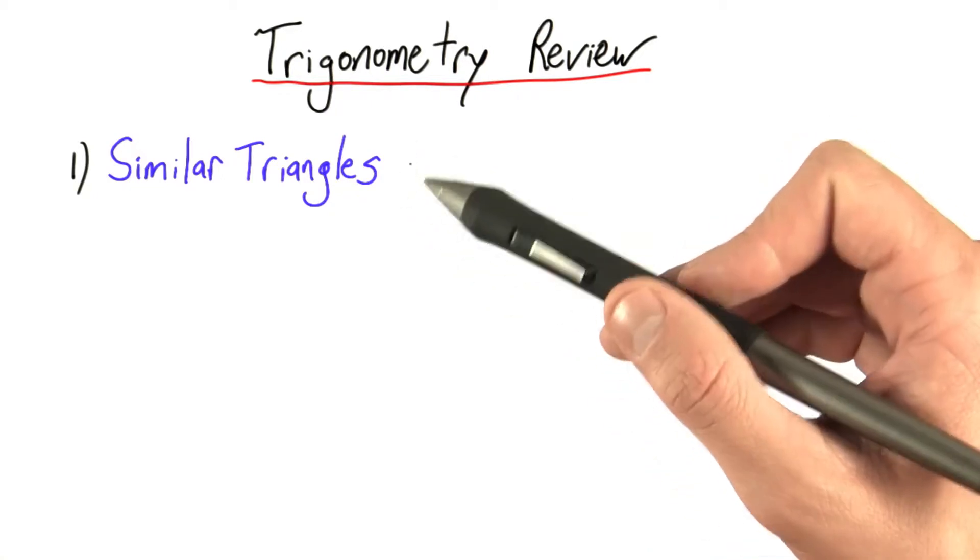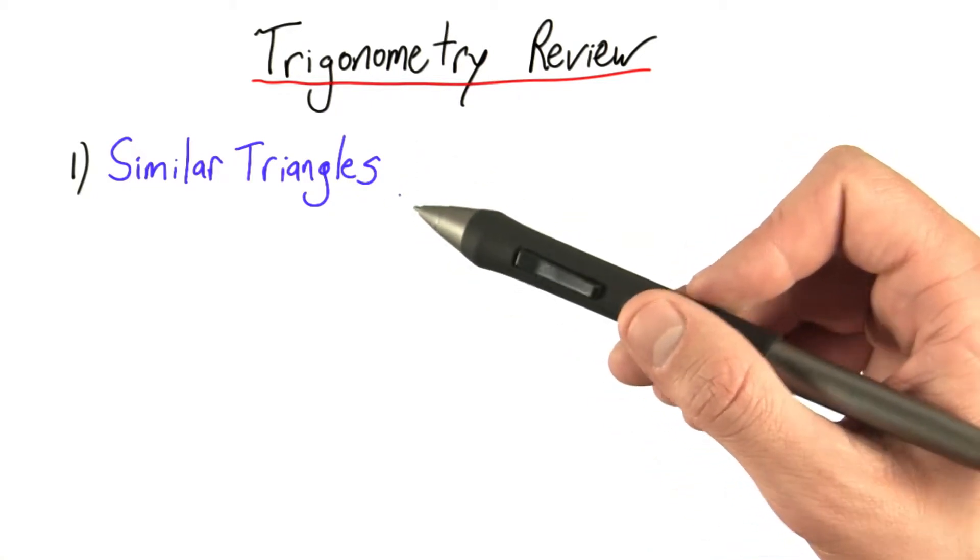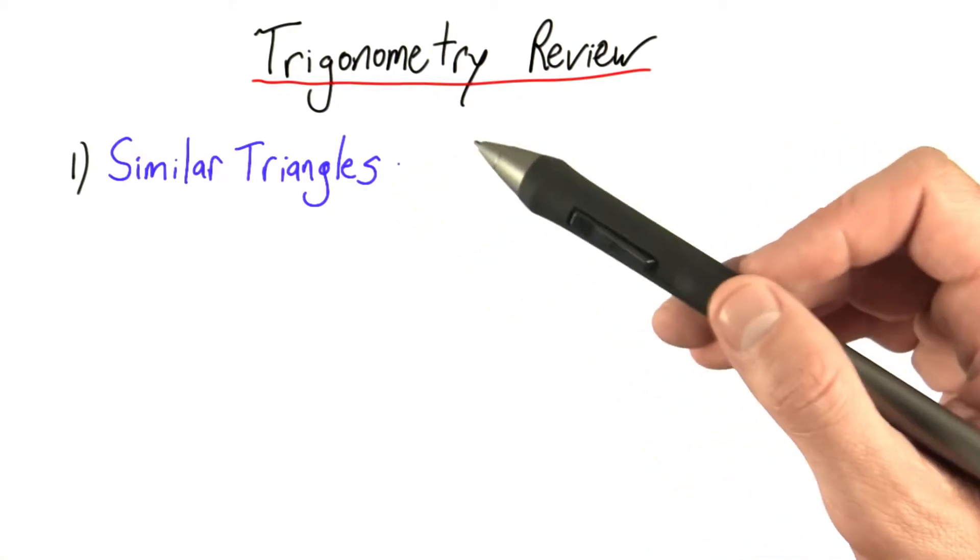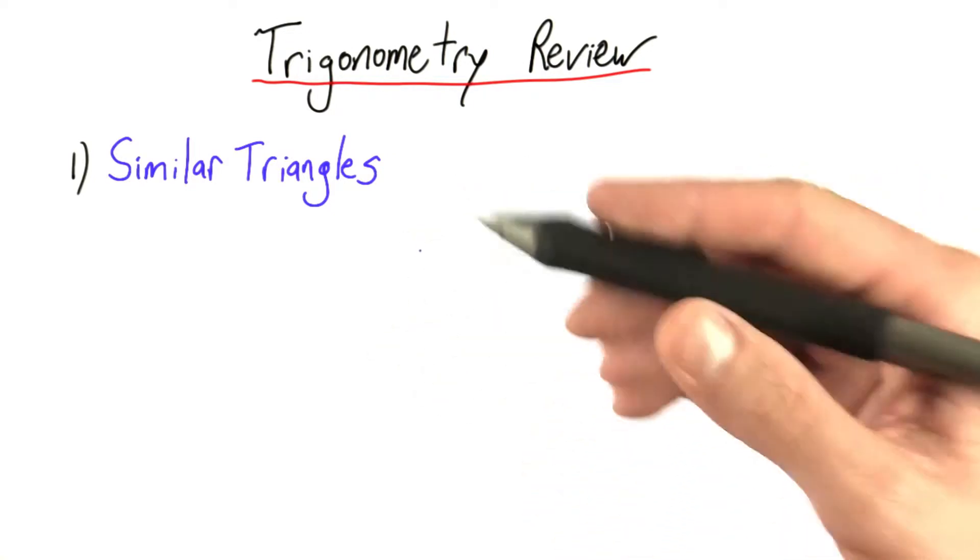Two triangles are similar if their angles are identical, even though their sides don't have to be the same length. And we learned that these triangles have many special properties.